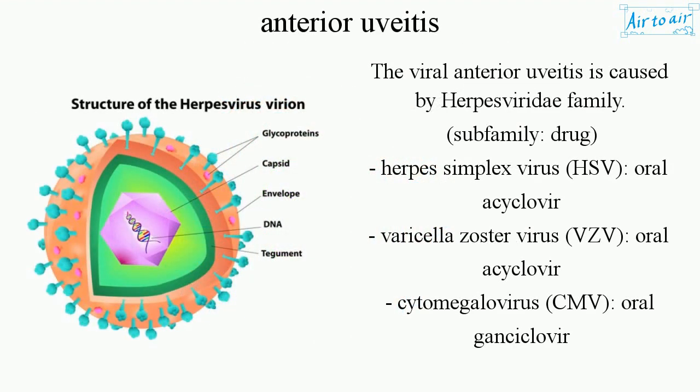Viral anterior uveitis is caused by the herpes viridae family. This includes herpes simplex virus (HSV), treated with oral acyclovir; varicella zoster virus (VZV), treated with oral acyclovir; and cytomegalovirus (CMV), treated with oral ganciclovir.